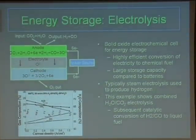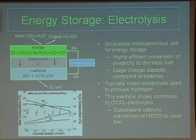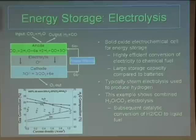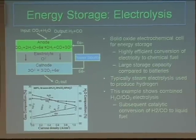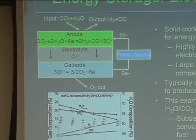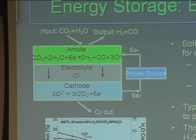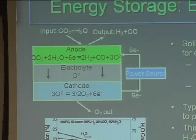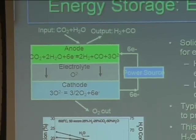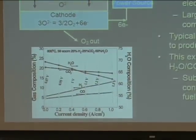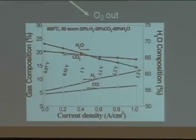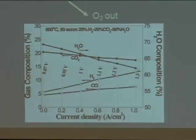This is an example of using a solid oxide fuel cell as an electrochemical cell — an SOEC. We apply a reverse bias, forcing oxygen towards the air electrode against its concentration gradient. With carbon dioxide and water — either one or both in combination — this splits the oxygen off to produce hydrogen and carbon monoxide, also known as syngas, which is a precursor for catalytic conversion to liquid fuels. As you increase the current density, the content of water and CO2 decreases and your hydrogen and carbon monoxide increases.